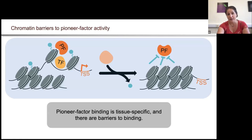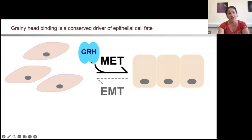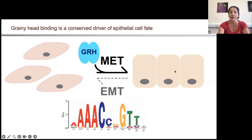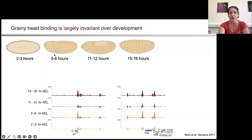Another pioneer factor we studied in the lab is a protein called Grainy Head. It's conserved from fungi to humans, it's involved in driving epithelial cell fate in all organisms studied, and it binds to a conserved DNA sequence. When we analyzed Grainy Head binding over development, looking at multiple stages of embryogenesis in Drosophila, we saw that once it occupied these binding sites in the early embryo, those same binding sites were occupied throughout embryogenesis — and even in tissues from the larvae two to three days later.